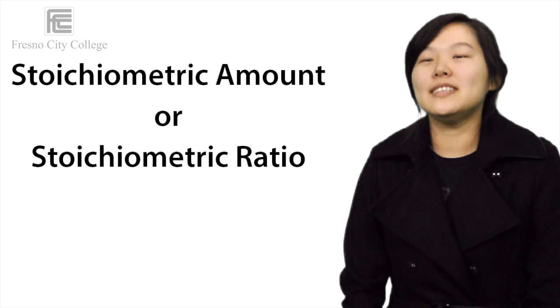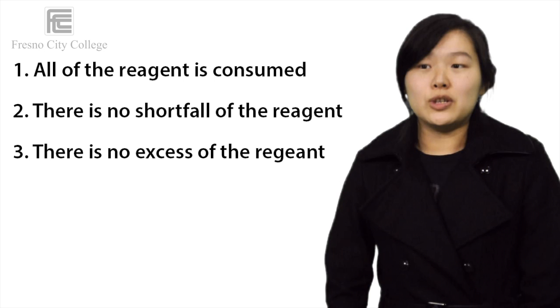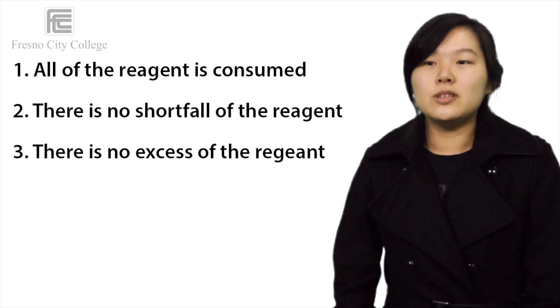A stoichiometric amount or stoichiometric ratio of a reagent is the ideal outcome of a given reactant assuming that: 1) all the reagent is consumed, 2) there is no shortfall of the reagent, and 3) there is no excess of the reagent. If these conditions are not met, then only the limiting reagent is consumed during the completion of a reaction, which is known as a limiting reactant.